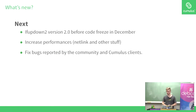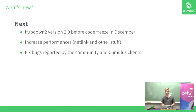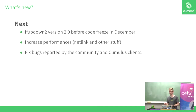What's next? We plan on releasing version 2.0 before the code freeze in December. It should really increase performance. There are some features we might add, but we have to discuss them internally — it's not 100% decided yet. We keep fixing bugs reported by the community and Cumulus customers.